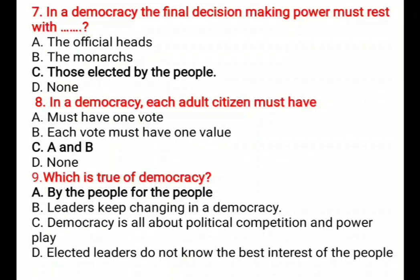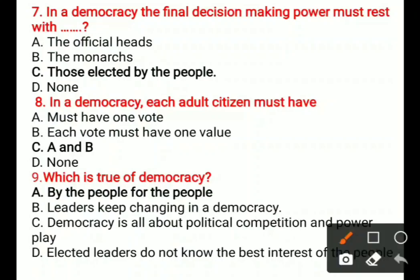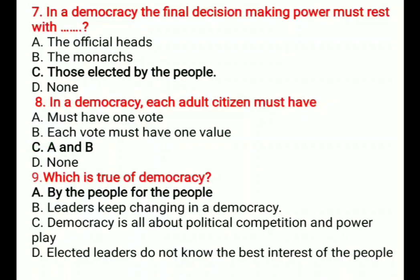Question 8: In a democracy, each adult citizen must have — A) One vote, B) Each vote must have one value, C) A and B, D) None. The correct answer is C, A and B — must have one vote and each vote must have one value.